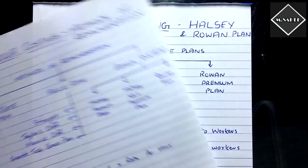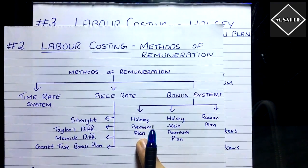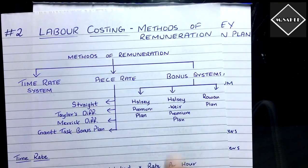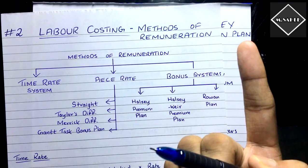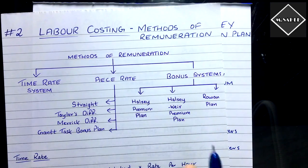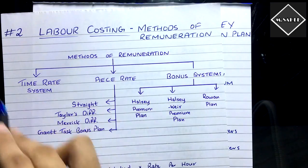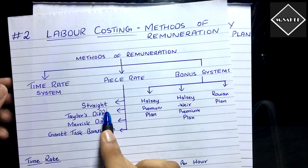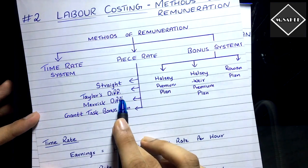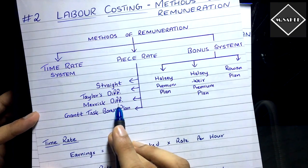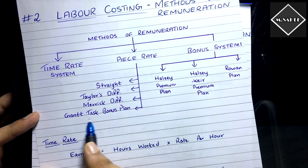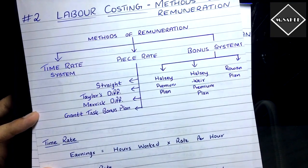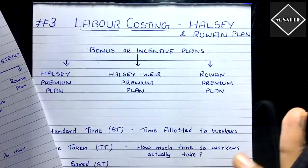In this video we are going to focus on bonus or incentive plans: the Halsey Premium Plan, Halsey Via Premium Plan, and Rowan Plan. In the previous two videos we covered labor turnover and its three calculation methods, then methods of remuneration — time rate system, straight piece rate system, Taylor's differential piece rate system, and Merrick differential piece rate system. The Gantt task bonus plan we'll cover later as it's less important from an exam point of view.